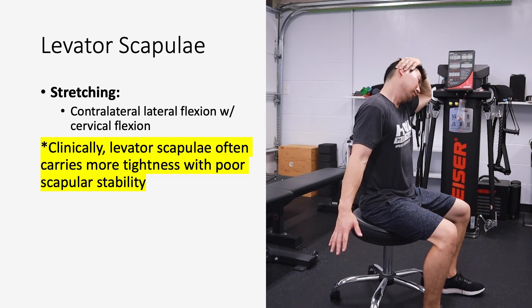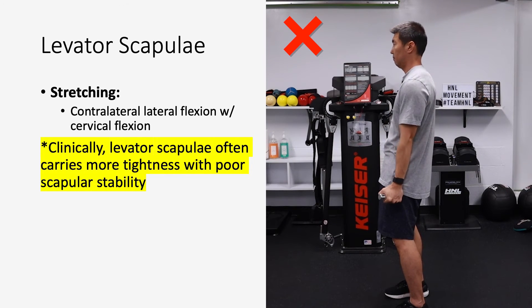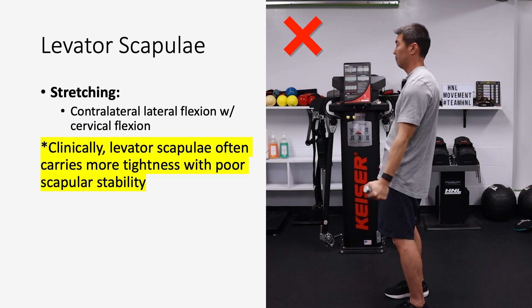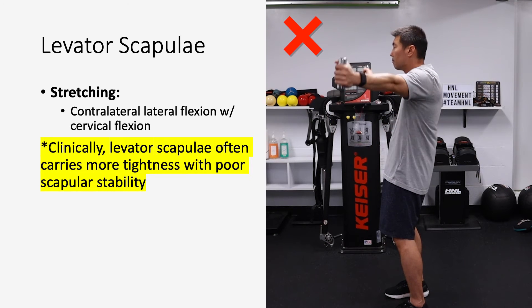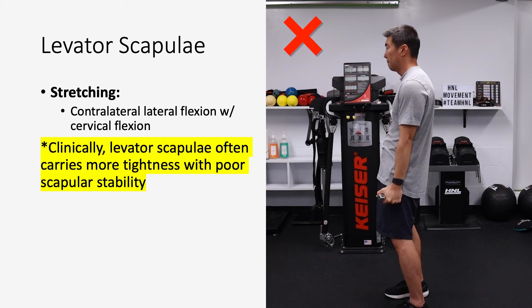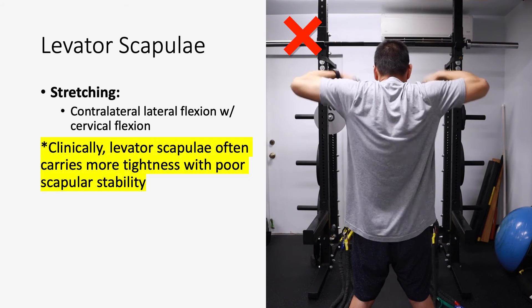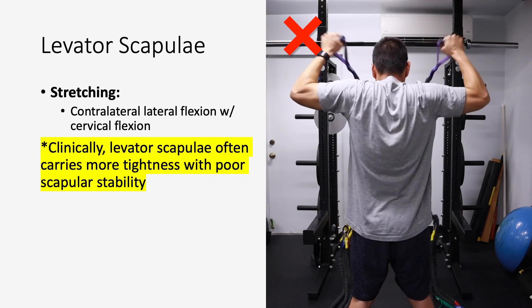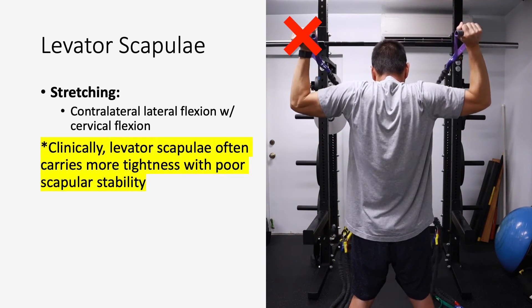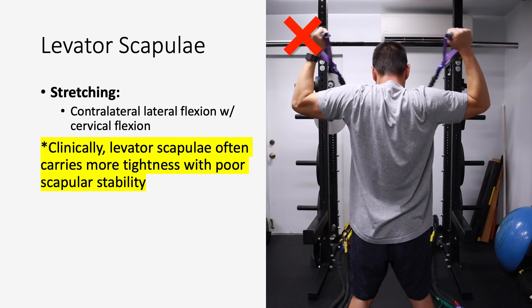Clinically, if you have poor scapular stability, the levator scap tends to hold a lot more tension, trying to provide a little bit more scapular stability, but this is not the most ideal way to compensate for lack of scapular stability. So if you have poor scapular stability, you might be overusing your levator scapulae, which could be problematic for head posture and neck tightness.